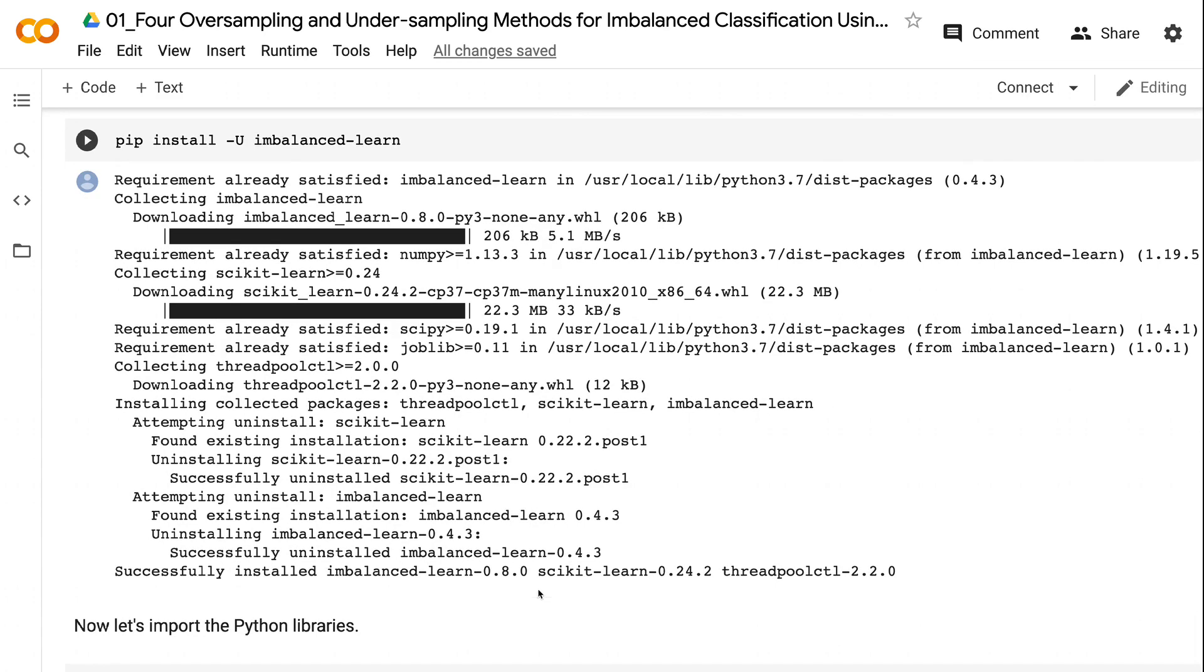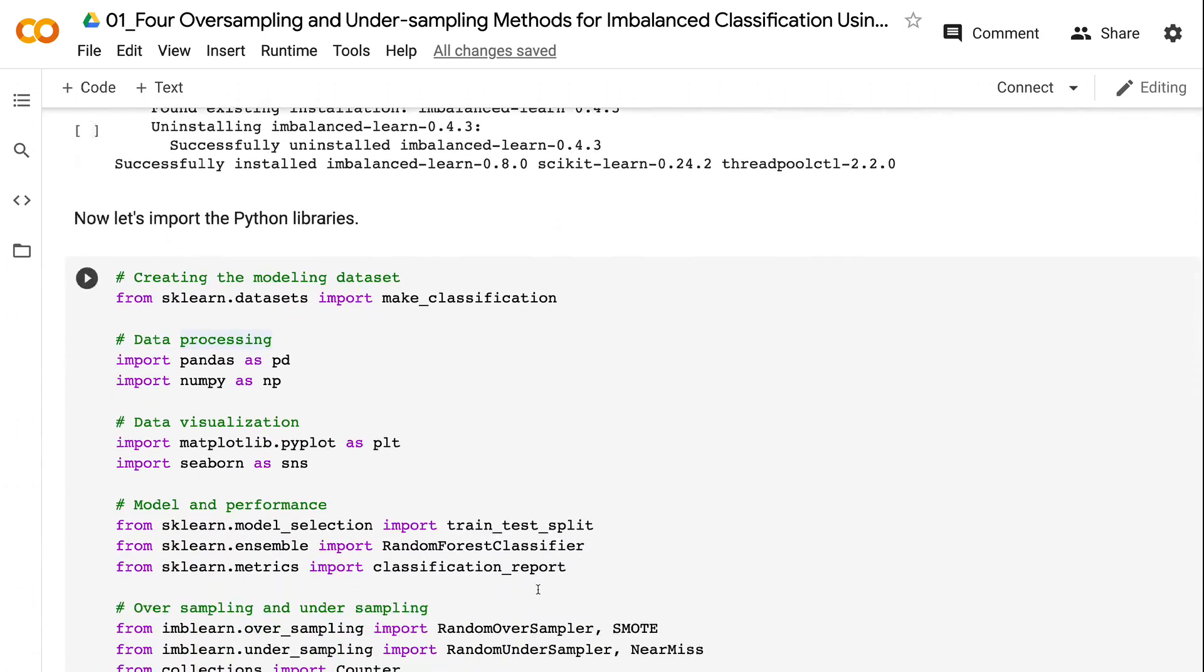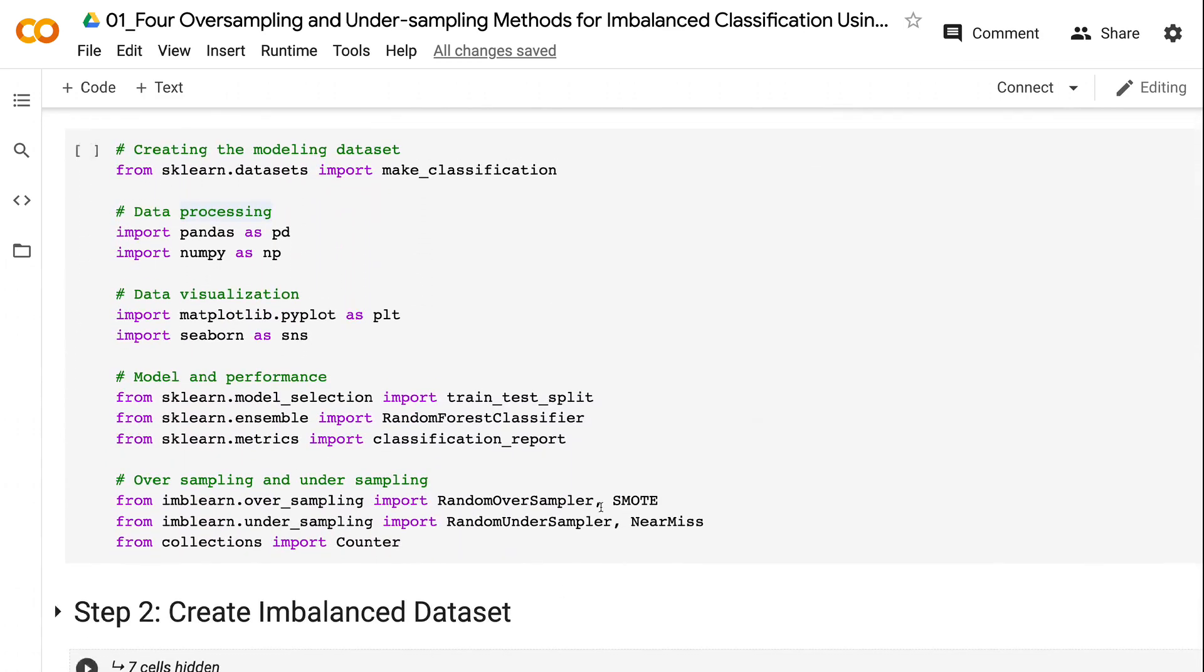Now let's import the Python libraries. We need to import make_classification from sklearn to create the modeling dataset, import pandas and numpy for data processing, matplotlib and seaborn for visualization. We also need the train_test_split, random forest classifier, and classification report for model training and performance evaluation.